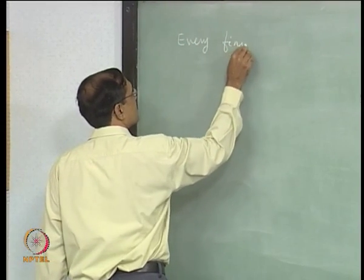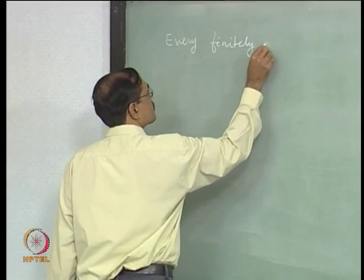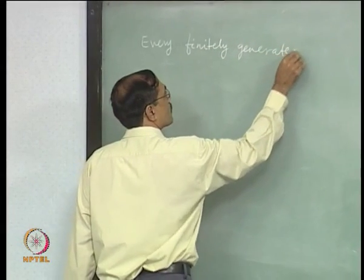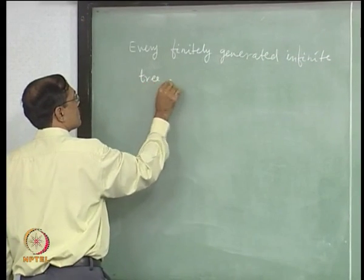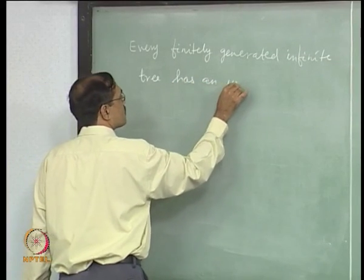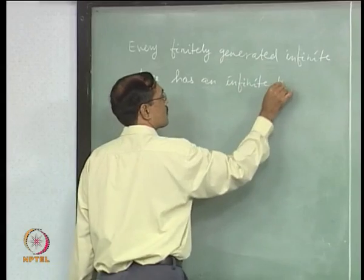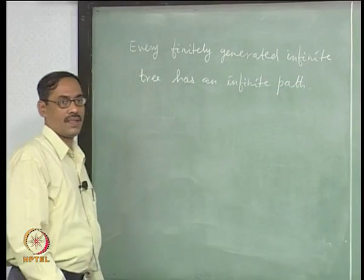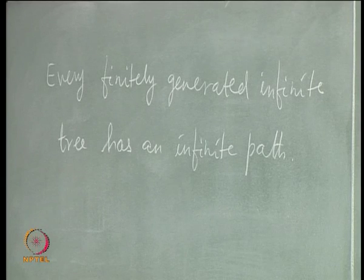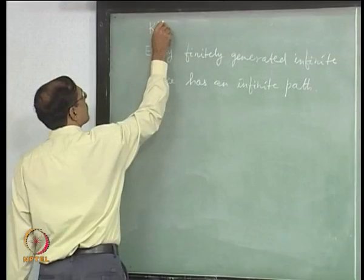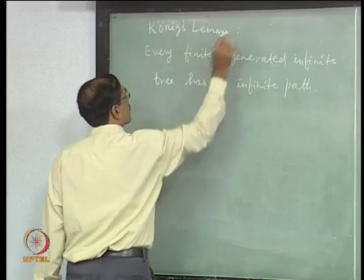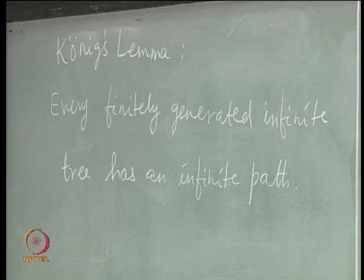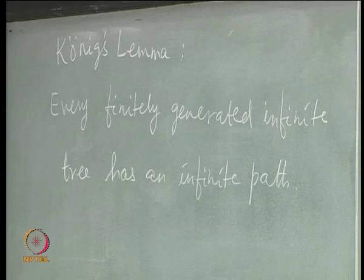Every finitely generated infinite tree has an infinite path. This is what we want to prove. This is called König's Lemma. Of course, we have realized the truth of it, but now we want to have a proof, because it does not follow obviously. So we need a proof.